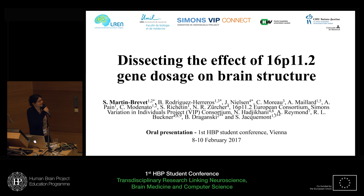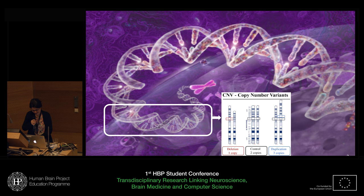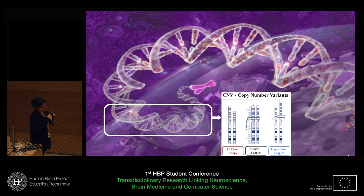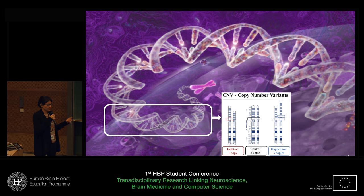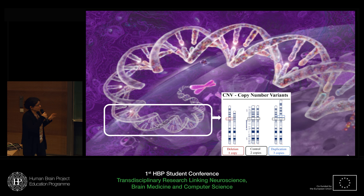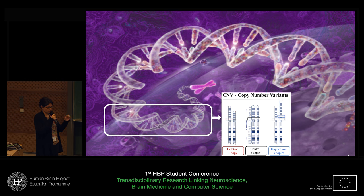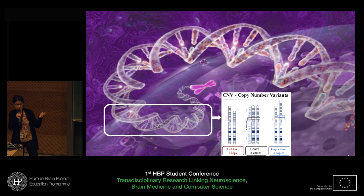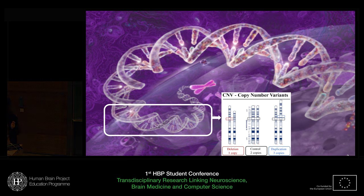First of all, 16p11.2 gene dosage — what does it mean? In genetics, there exist some structural variations of the chromosome, called CNVs for copy number variants. When you are a control, you have usually two copies of each genomic region, but if you carry a mutation, you can have either a deletion — only one copy of these regions — or a duplication, with three copies of these genetic regions.